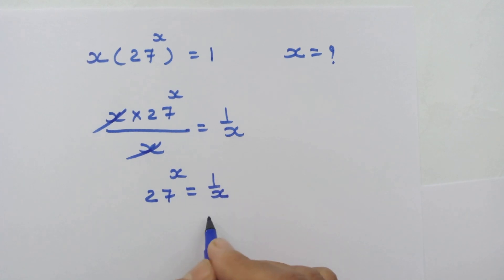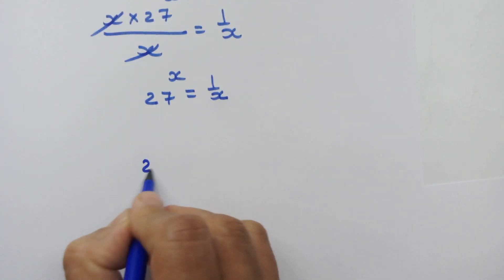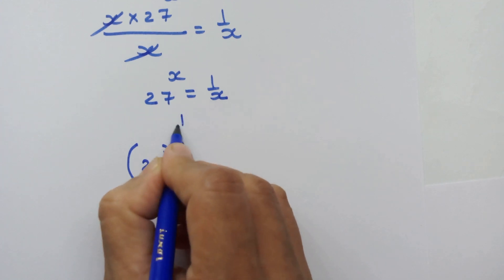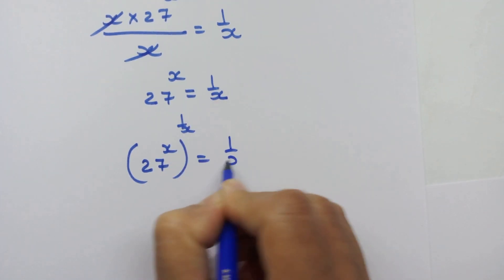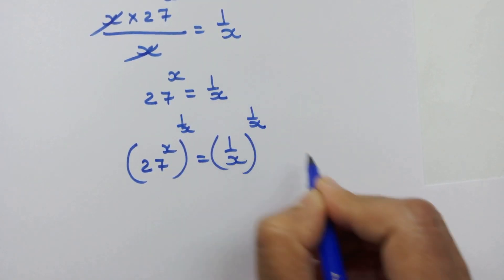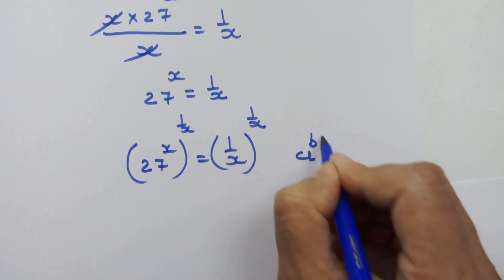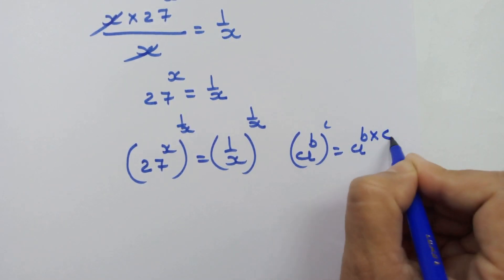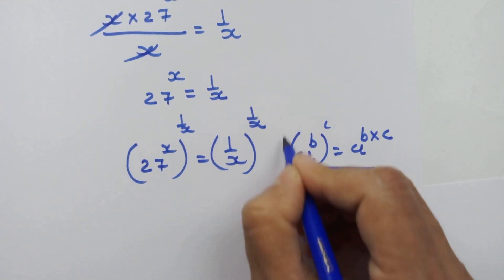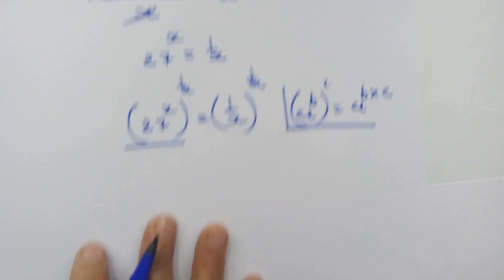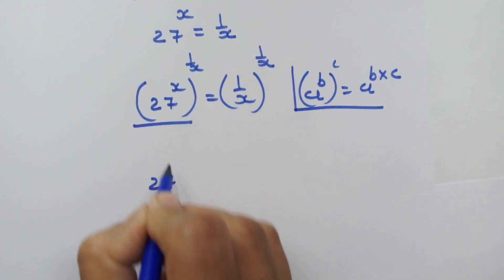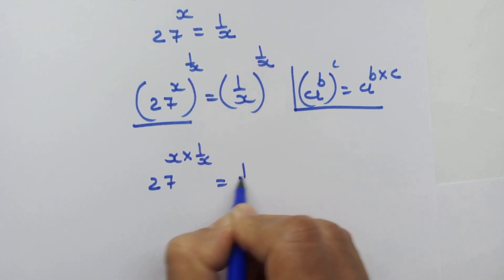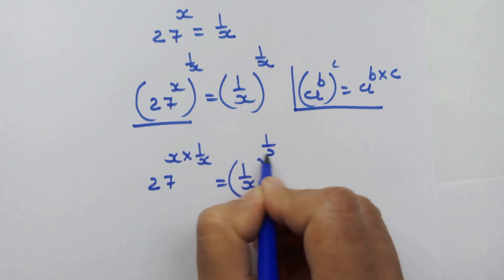Now let's raise both sides to the power of 1 upon x. So 27 raised to x, whole raised to 1 upon x, is equal to 1 upon x whole raised to 1 upon x. Using the rule that a raised to b whole raised to c equals a raised to b into c, we get 27 raised to x into 1 upon x, which equals 1 upon x whole raised to 1 upon x.